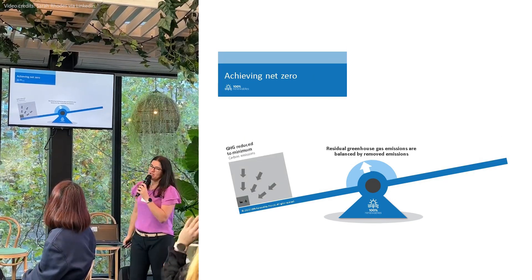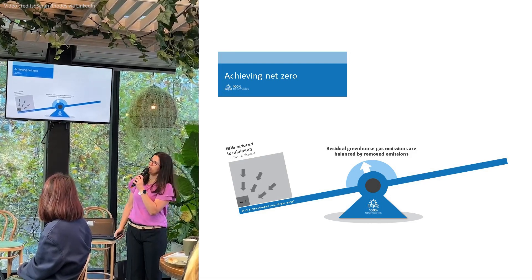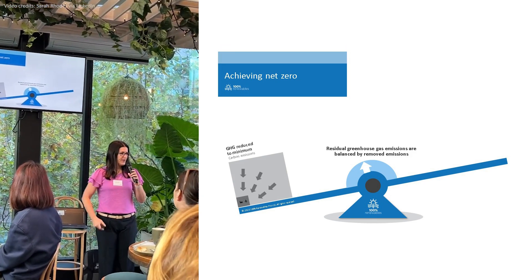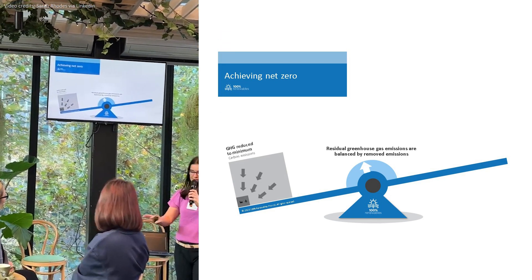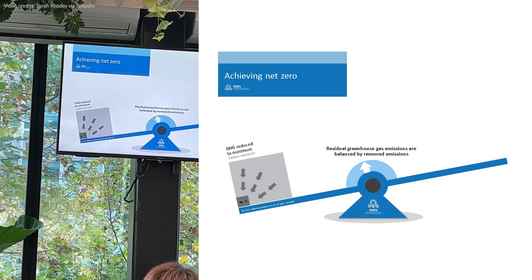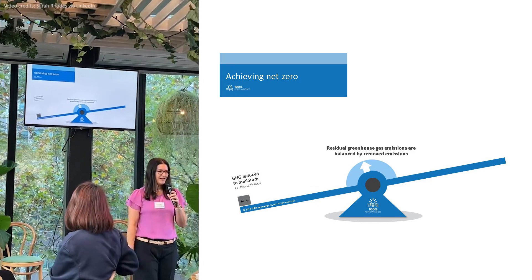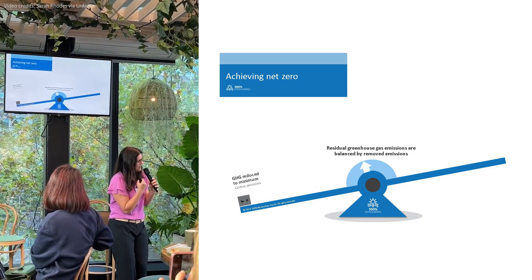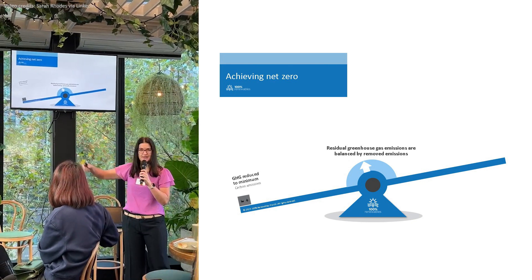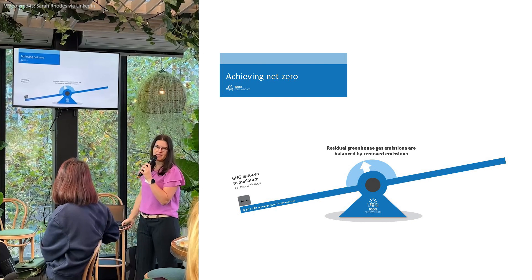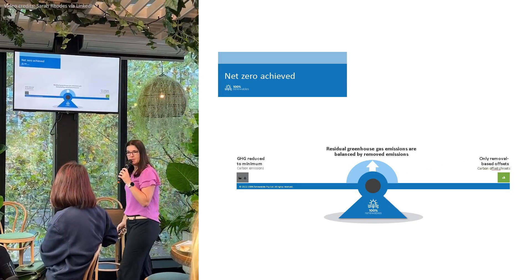Now the concept of achieving net zero is different. With net zero, the very first thing you have to do — and this happens over a long period of time, because it definitely doesn't happen overnight — is reduce your greenhouse gases to a minimum. You're totally squeezing the carbon out of your operations to end up with a tiny residual amount, perhaps around 10% of your original emissions over time. Then you balance that with carbon offsets.